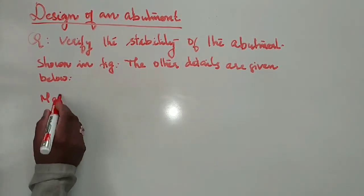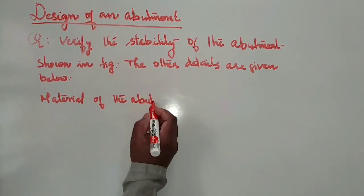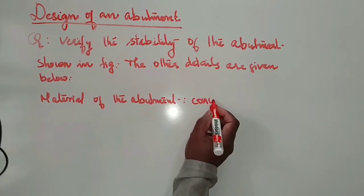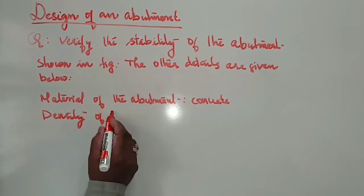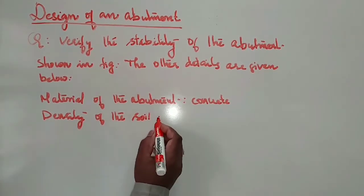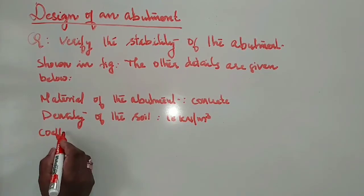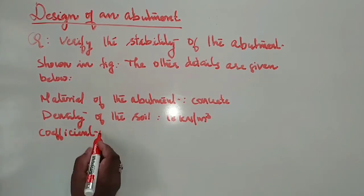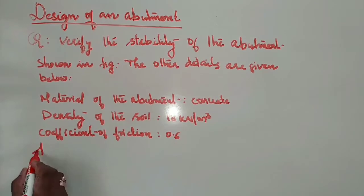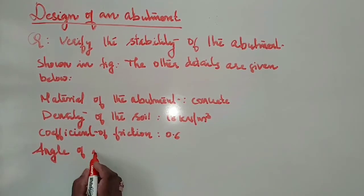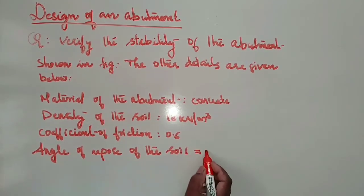First, material of the abutment: concrete. Density of the soil: 18 kN/m³. Coefficient of friction: 0.6. Angle of repose of the soil: 30 degrees.